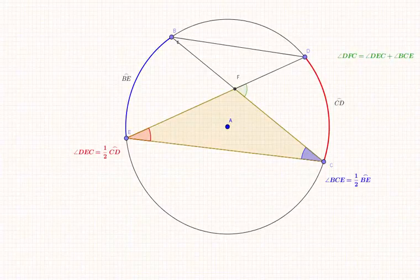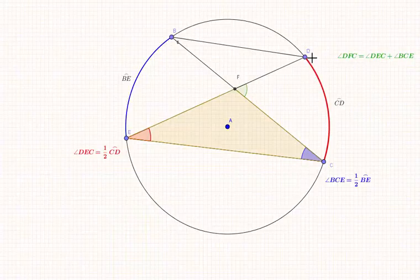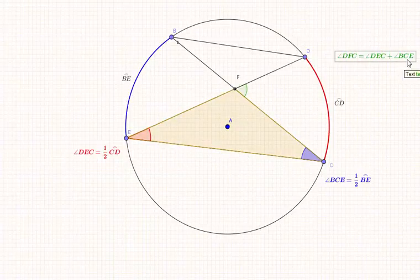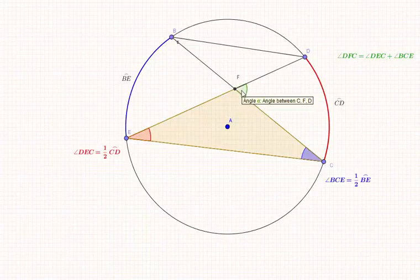That shows us that we have angle DFC is equal to the sum of these two angles: DEC plus BCE. So this angle is that angle plus that angle.